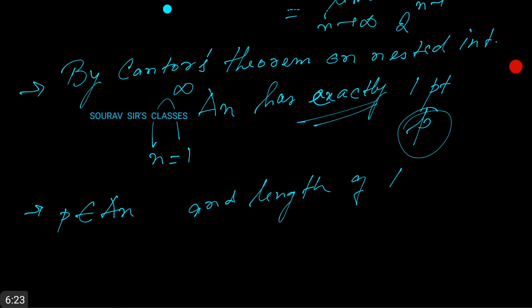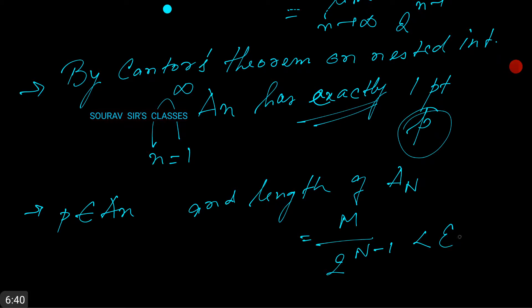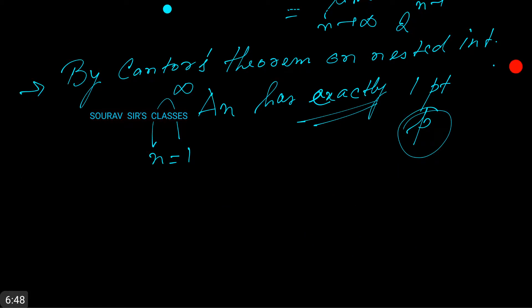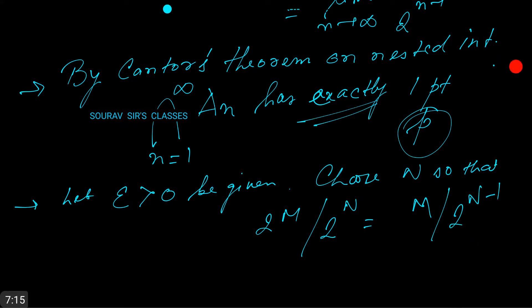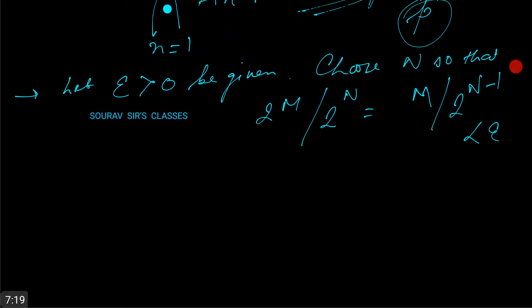The length of A_n equals M/2^(n−1), which is less than epsilon. Given epsilon greater than 0, choose N so that M/2^(N−1) is less than epsilon.